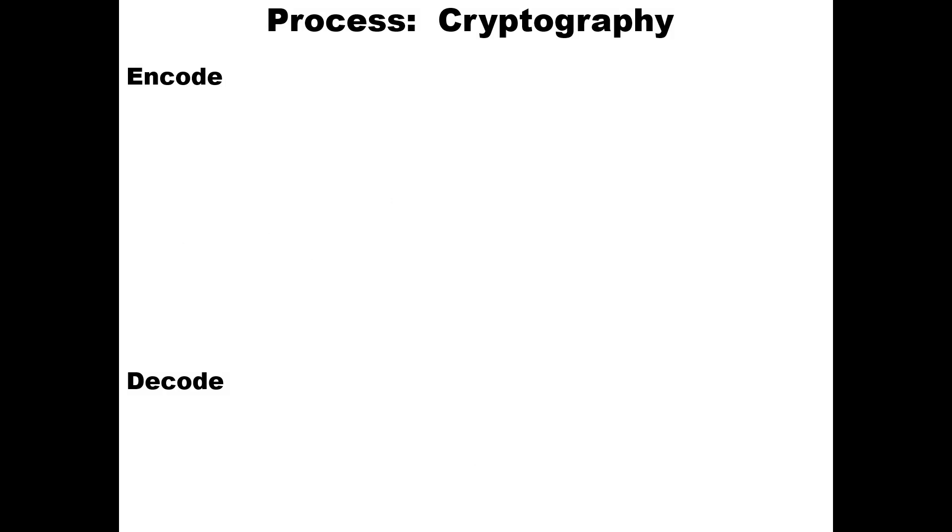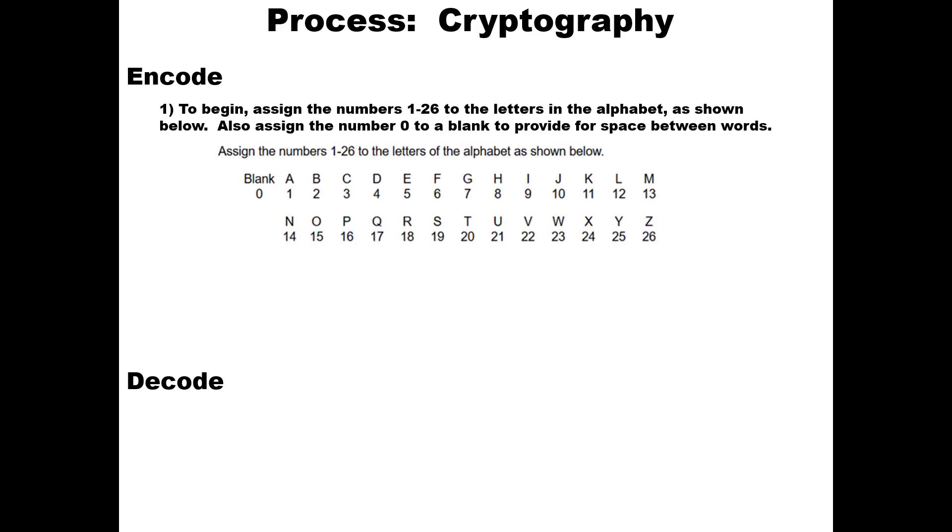This is really cryptography in the very simplest form, but the first thing we want to do is encode. First we need to learn how to encode a secret message. To begin, assign the numbers 1 through 26 to the letters in the alphabet as shown below. Also assign the number 0 to a blank to provide for space between words. Second, we're going to create a 2 by 2 encoded matrix that has an inverse, and this matrix we're going to call A.